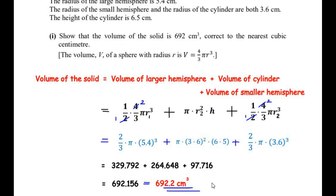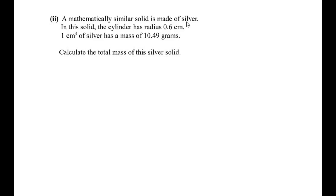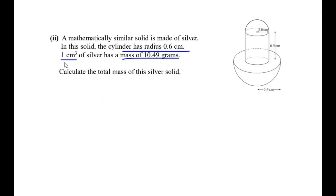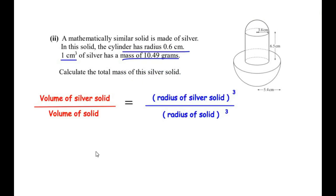Moving to sub-question (a)(ii): a mathematically similar solid is made of silver, where the cylinder has radius 0.6 centimeters. One cubic centimeter of silver has a mass of 10.49 grams. We need to calculate the total mass of this silver solid. Using the property of similar shapes, volume is proportional to the cube of corresponding lengths: volume of silver solid over volume of solid equals (radius of silver solid)³ over (radius of solid)³.